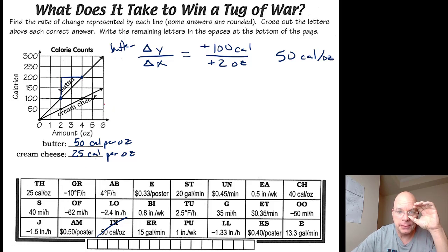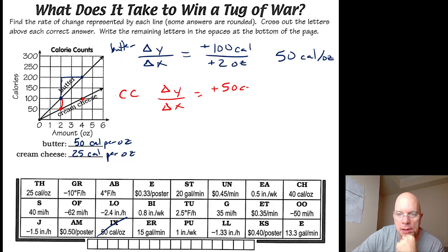The cream cheese rate of change - I'm going to use these two points, going from this lower point to this higher point. I'm increasing by 50 calories, and then I'm increasing the number of ounces by two, I'm going from two ounces to four ounces. 50 divided by two is 25, so 25 calories per ounce for the cream cheese, which is right there.